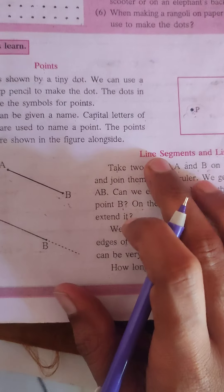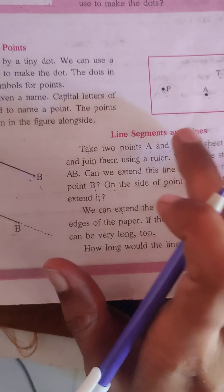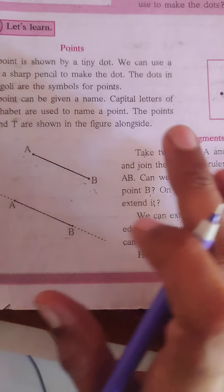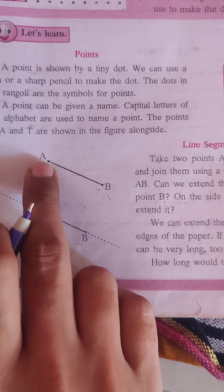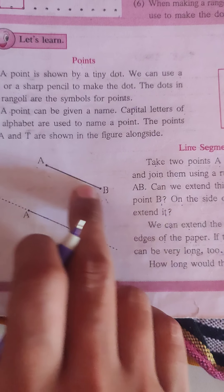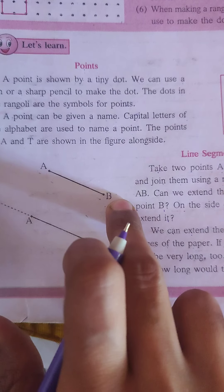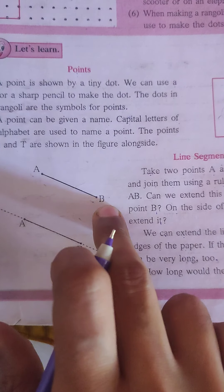Next is a line segment and line. So here you see A and B is a line segment. It is a line segment.